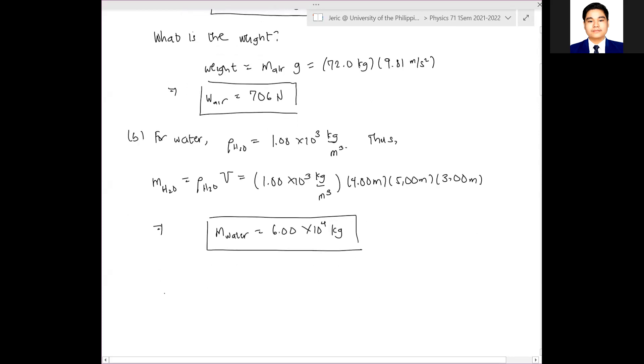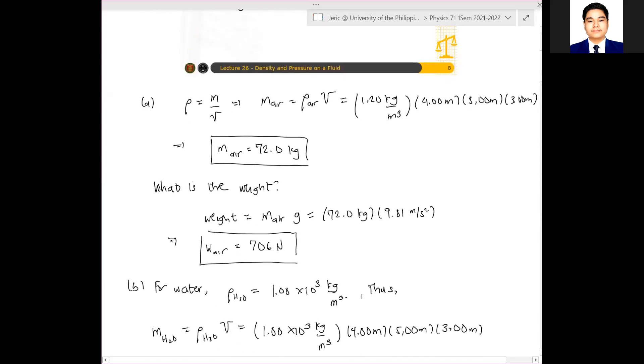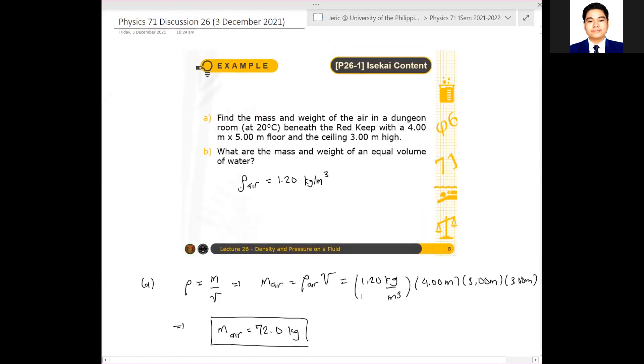And then, finally, the weight of water is mass in water times g, which is simply 6.00 times 10 to the 4 kilograms multiplied by 9.81 meters per second squared. And therefore, the weight of water is about 5.89 times 10 to the 5th newtons. That is the answer. Okay? Andali lang. Ganun lang mag-calculate ng density ng isang fluid.